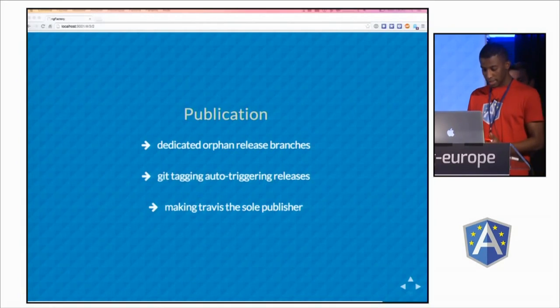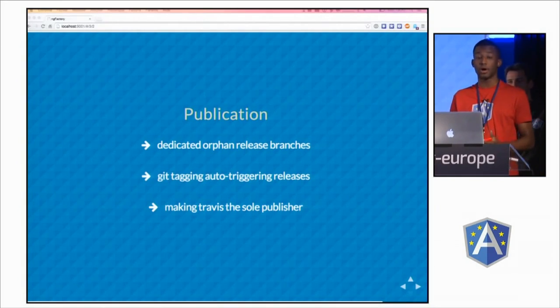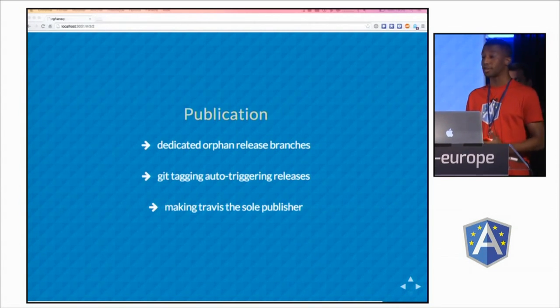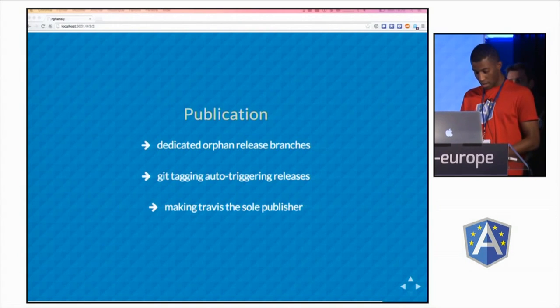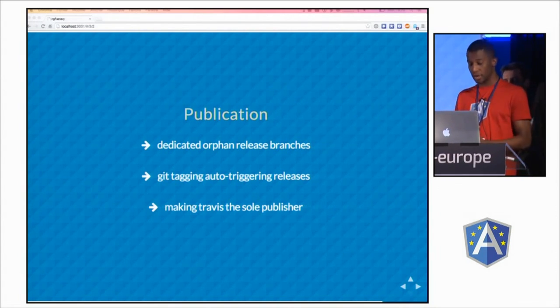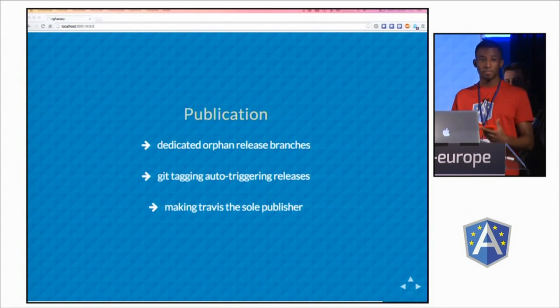For publication, we want to take your build folder out of the master branch, so we're really pushing forward an orphan branch to do that. Since it involves a lot of Git tricks, we want Travis to do it. At the end, you just make a tag and push it to your repo, and Travis will handle all the building and deploying itself.